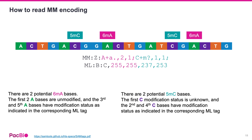The next MM encoding of value 1 tells us that from the previous modified base, the next adenosine is unmodified, but the following adenosine after that has a 6mA detection with a corresponding probability of 255.